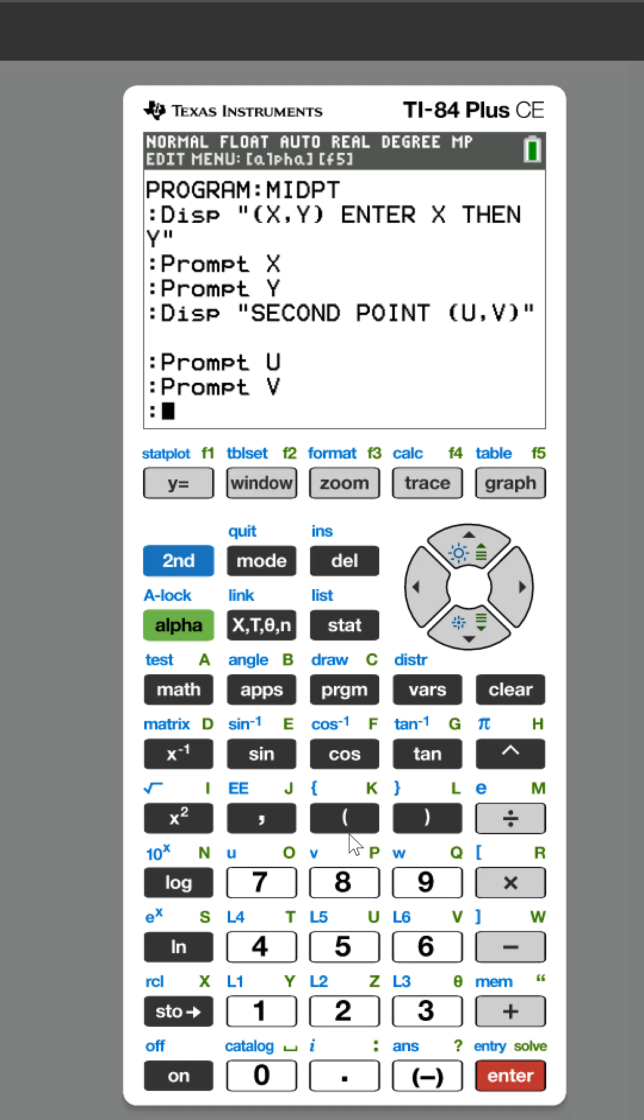Now we actually write the programming part. We have two points - to find the midpoint you're gonna add the X coordinates, so X plus Y, and then we divide that by two.